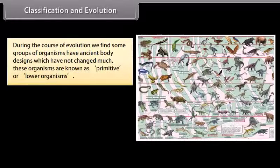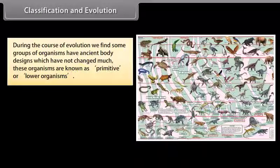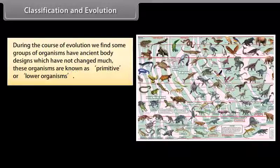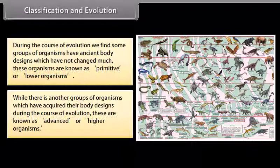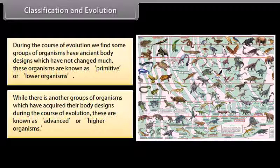During the course of evolution, we find some groups of organisms have ancient body designs which have not changed much. These organisms are known as primitive or lower organisms. While there is another group of organisms which have acquired their body designs during the course of evolution; these are known as advanced or higher organisms.